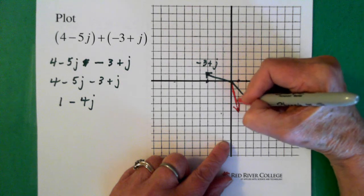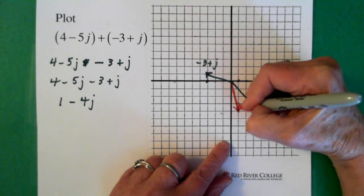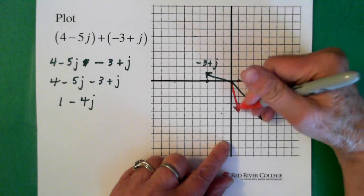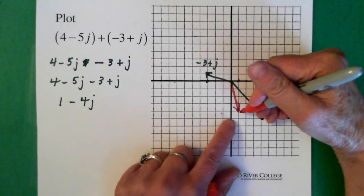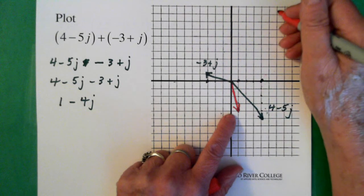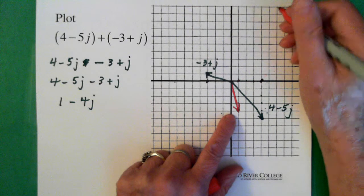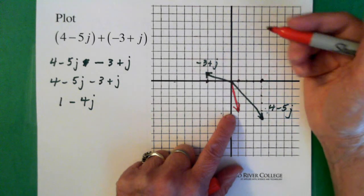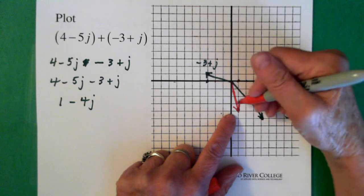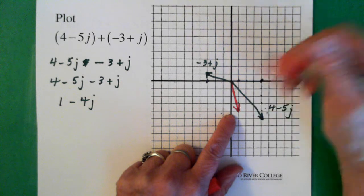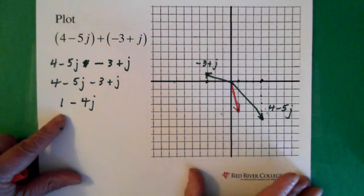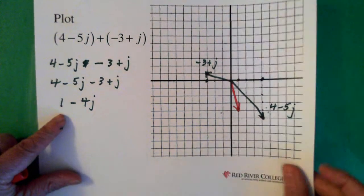And remember when we're doing this, we're really adding these two vectors. So in essence, this answer makes sense. If we'd have ended up with an answer going up here somewhere, we'd have to say maybe I made a mistake somewhere. But these two vectors — it makes sense that they would add up to this.